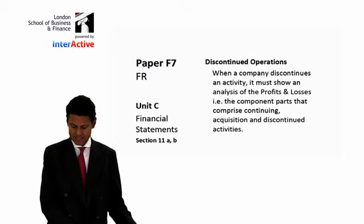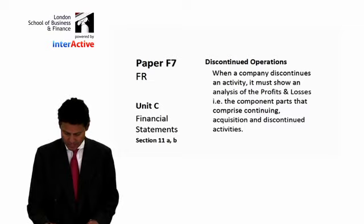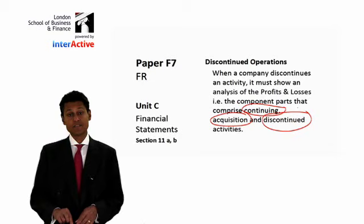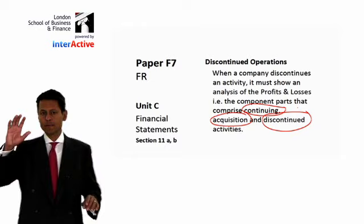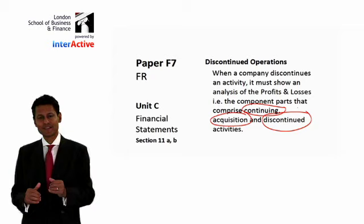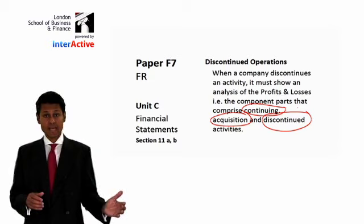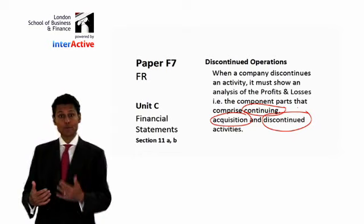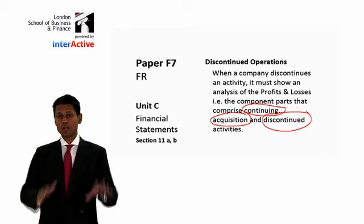When a company discontinues an activity, it must show an analysis of the profits and losses — the component parts that comprise continuing, acquisitions, and discontinued activities. Continuing is what the company starts the year and ends the year with. Acquisitions are what the company acquires or starts up, maybe in the middle of the year, and continues from mid-year to year end. Discontinued is the opposite — activities started at the beginning of the year but stopped by the midpoint.